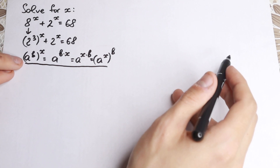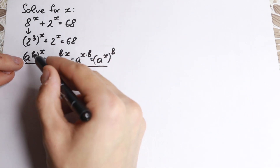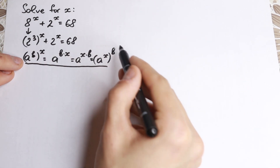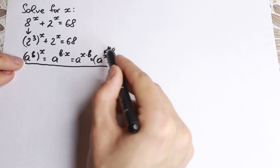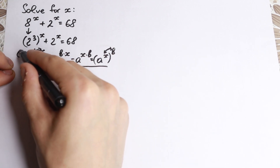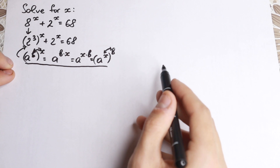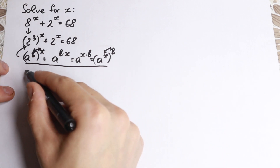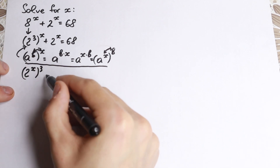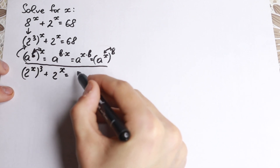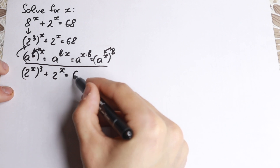Moreover, if we go from the left, this b was right here and it goes right here. So as a result we can easily swap these two powers. Let's apply this rule in this case — we can easily swap this. We will have 2 to the x raised to the power cube, plus 2 to the x, equal to 68.